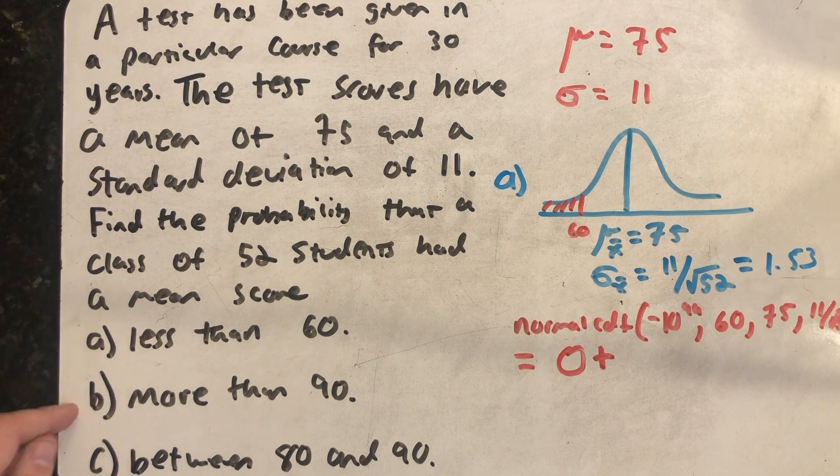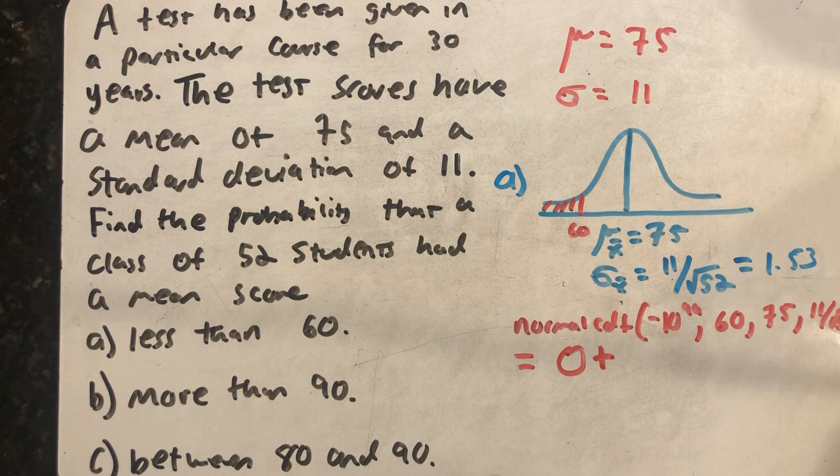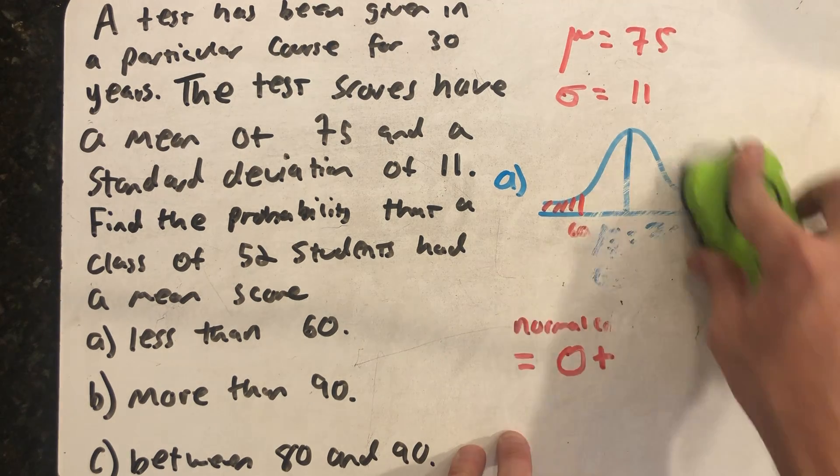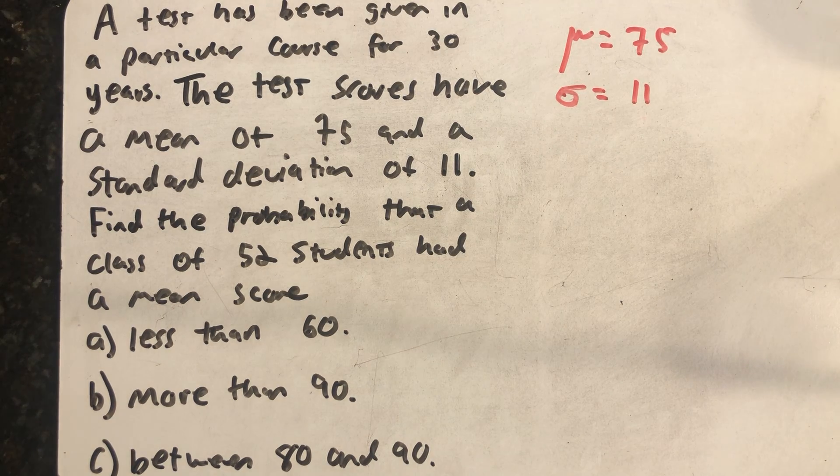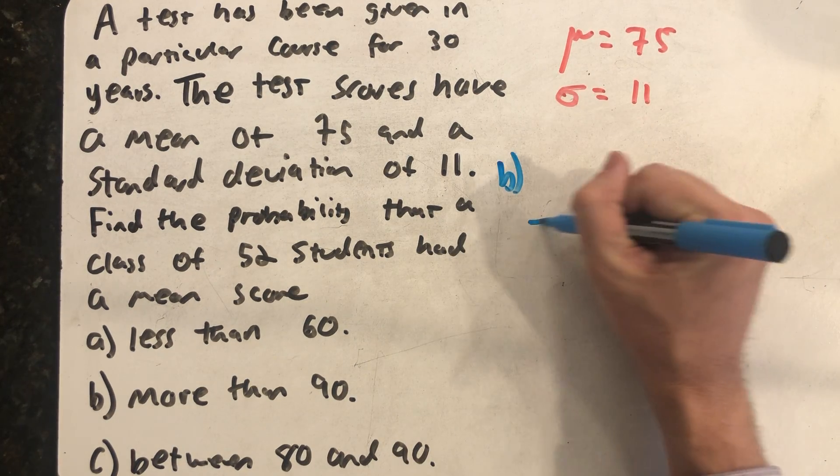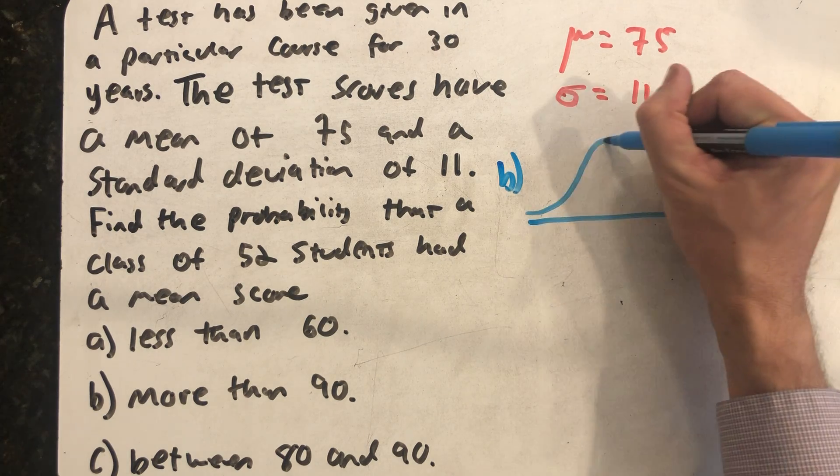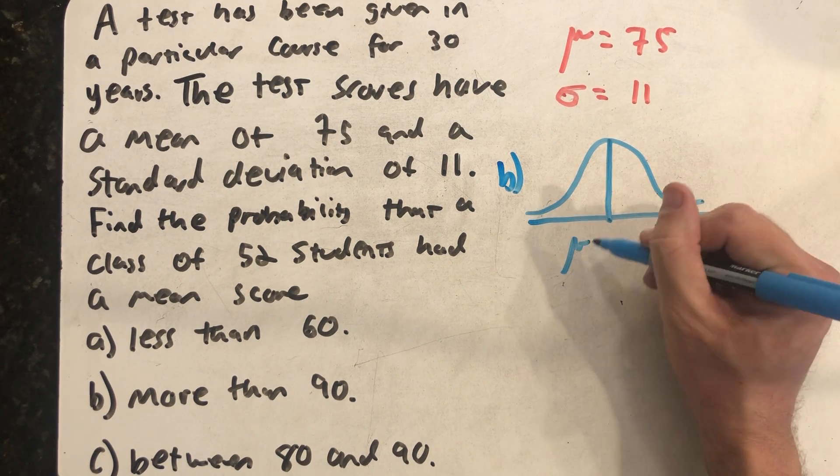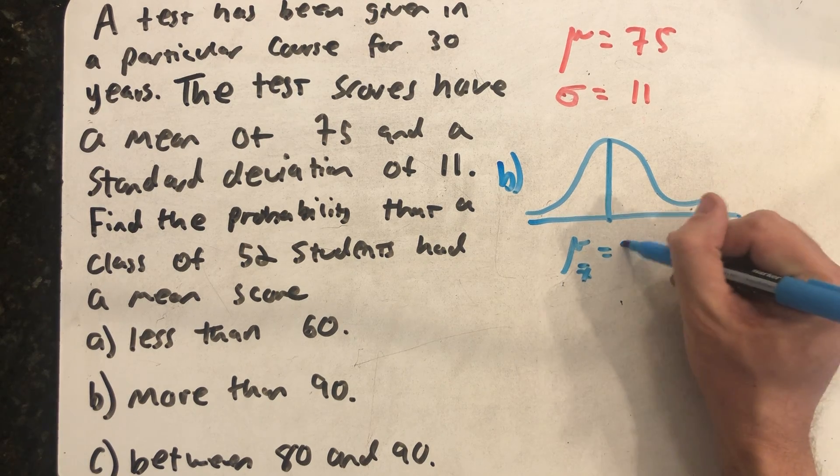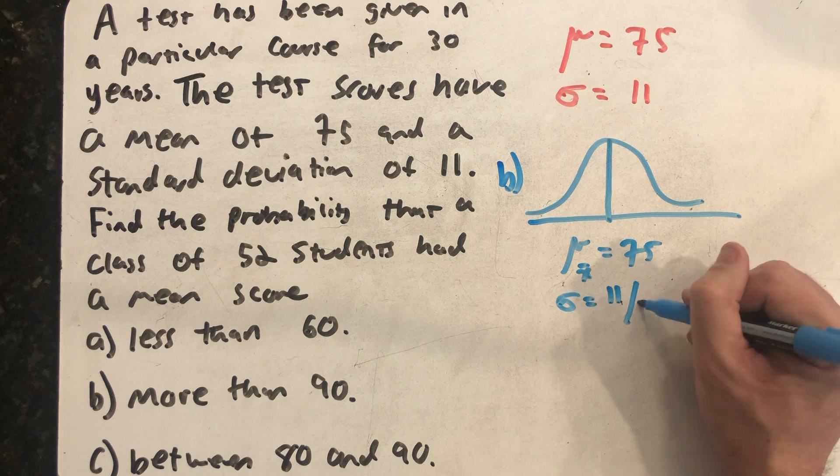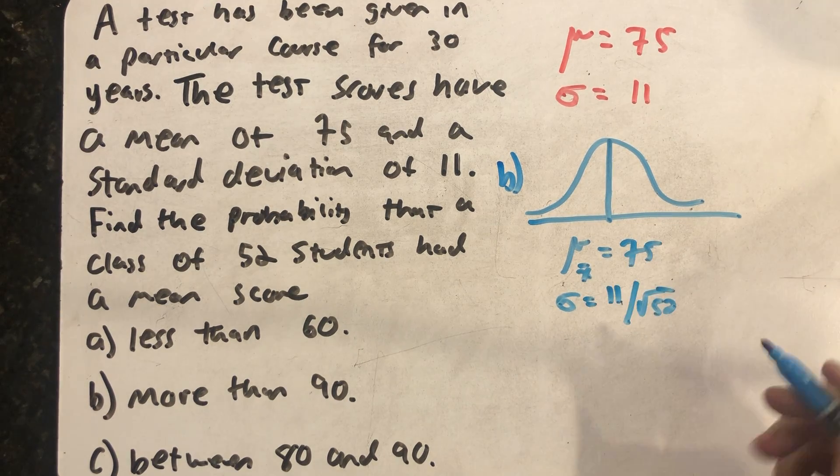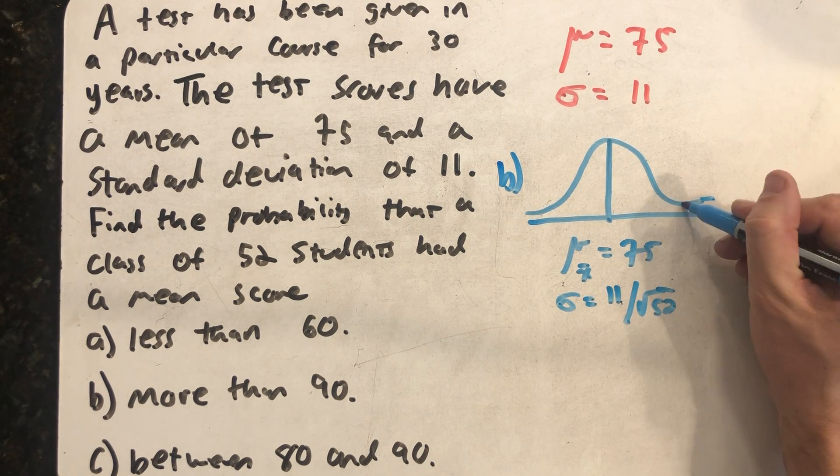Part B, more than 90. All right, so again dealing with the same situation with the same sample size, so the central limit theorem does still apply. The distribution of all the sample means will be a normal distribution. The mean of all the sample means, mu sub x-bar, will be 75. The standard deviation will be 11 divided by the square root of the sample size, still 52, and now this time, more than 90.